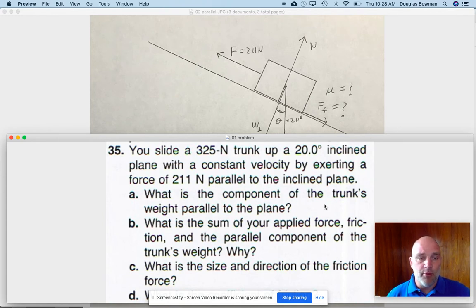So you might remember this one. We had done number 35 in the chapter. I just wanted to go through this one as an example to show you how we work with incline planes. So if you remember, it says here that we slide a 325 Newton trunk up a 20 degree incline plane. We're going to slide at a constant velocity by exerting a force of 211 Newtons parallel to the incline plane.